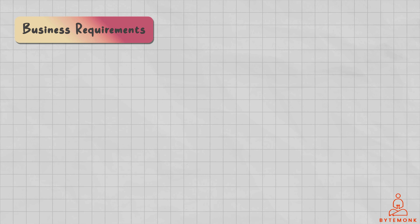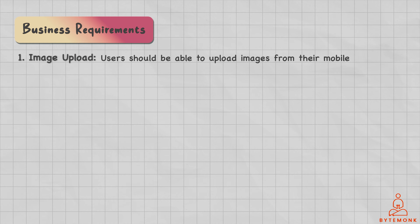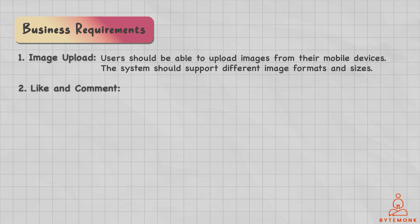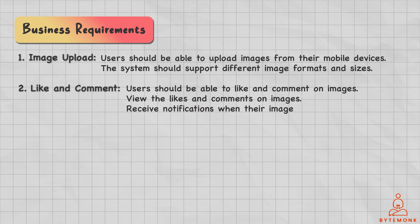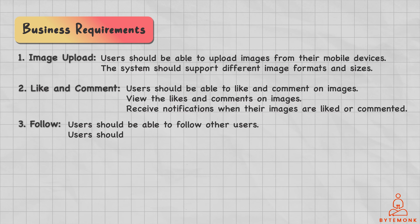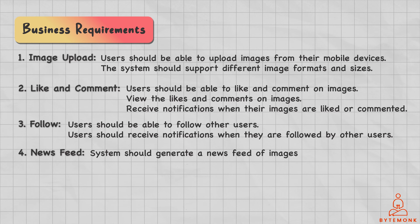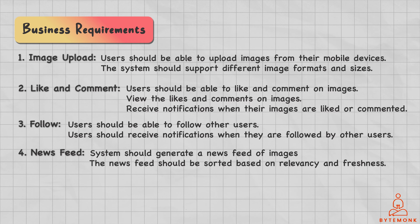Let's talk about business requirements. Users should be able to upload images from their mobile devices, be it iOS or Android, and the system should support different image formats and sizes. Users should be able to like and comment on images, view the likes and comments on images, and they should also be able to receive notifications when their images are liked or commented on. Users should also be able to follow other users and receive notifications when they are followed by other users. The system should generate a news feed of images based on the user's interest and activity, sorted based on relevancy and freshness. Other requirements include user authentication and authorization, direct messaging, analytics and reporting, or any kind of advertisement support.